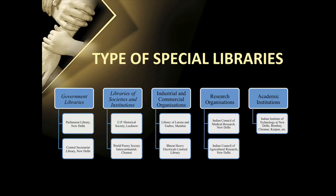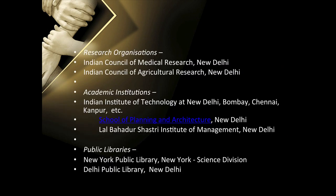There are varied types of special libraries. Government libraries include Parliamentary Library in New Delhi and Secretariat Library in New Delhi. Libraries of societies and institutions include UP Historical Society in Lucknow and World Poetry Society Intercontinental in Chennai. Industrial and commercial organizations include the library of Larsen and Toubro in Mumbai and Bharat Heavy Electricals Ltd. library in New Delhi. Research organizations include Indian Council of Medical Research, New Delhi and Indian Council of Agricultural Research, New Delhi. Academic institutions include Indian Institute of Technology libraries at New Delhi, Bombay, Chennai and Kanpur, School of Planning and Architecture in New Delhi, and Lal Bahadur Shastri Institute of Management, New Delhi. Special public libraries include New York Public Library (Science Division) and Delhi Public Library, New Delhi.